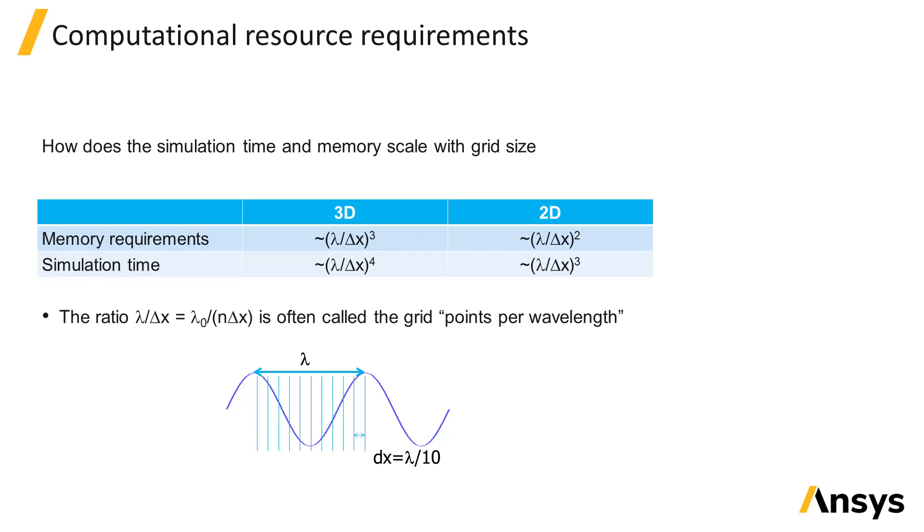As a coarse rule of thumb, you can get initial FDTD results with 6 points per wavelength and many results such as transmission and reflection will be within 10 or 20% of the correct answer. By 10 points per wavelength, many results will be within 1 to 2% of the correct result and it is rare to require more than 20 points per wavelength.